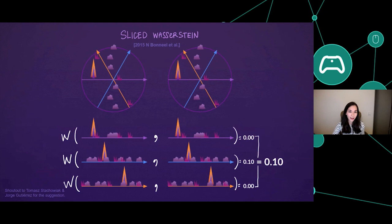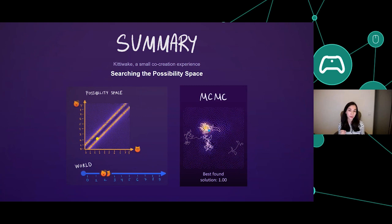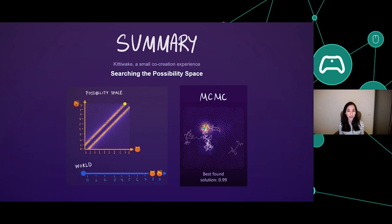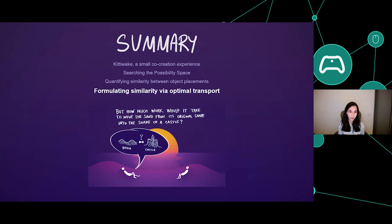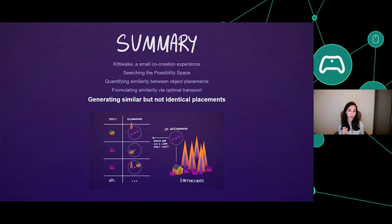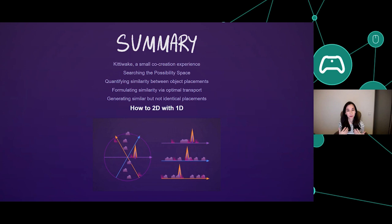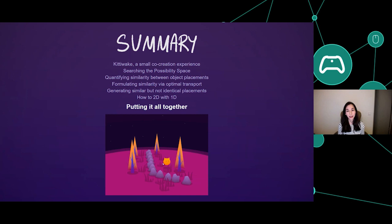To summarize: we explored a feeling of co-creation with an example-based placement algorithm in Kittawake. We dived into possibility space, which represents all possible outputs of our algorithm. When the space becomes too big, we deploy search strategies such as Markov Chain Monte Carlo. For the search to work, we need a way to score every proposed arrangement, so we covered a way to numerically express similarity between two spatial arrangements using optimal transport. We talked about breaking down the example into neighborhood interactions to synthesize similar-looking arrangements that are not copies of the example. Then we showed how to compare 2D neighborhoods using sliced Wasserstein, and how it all comes together into Ketus assisting you with placements.